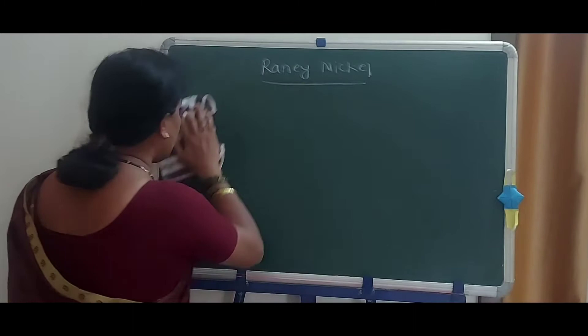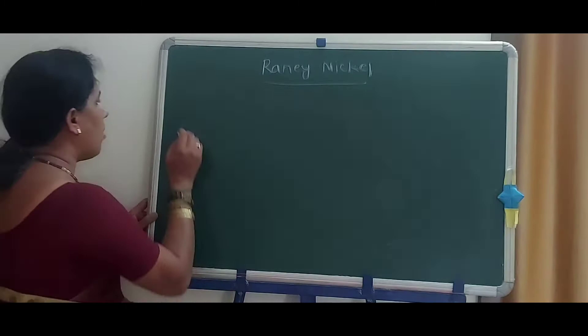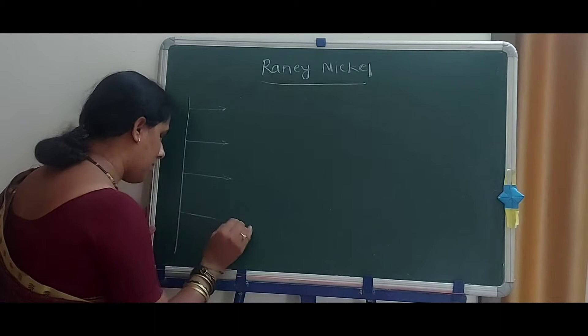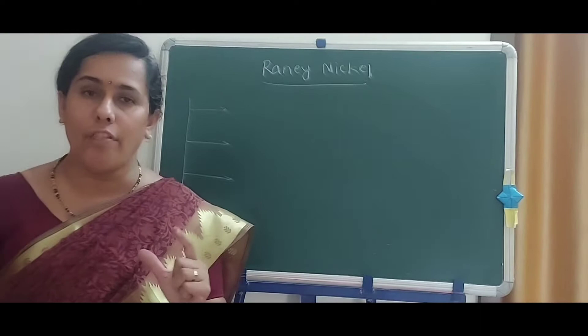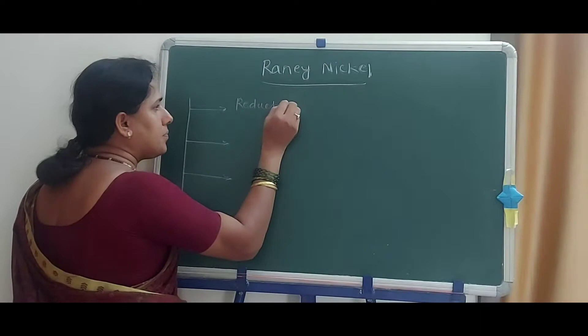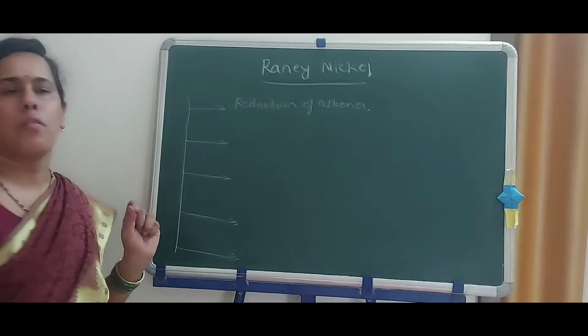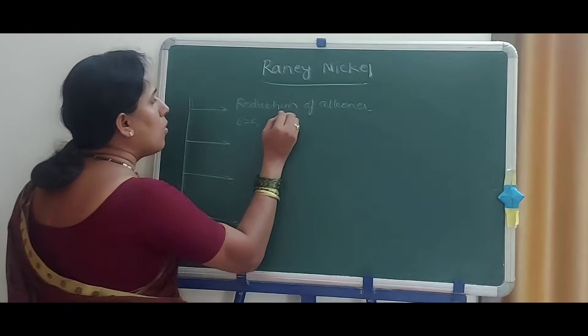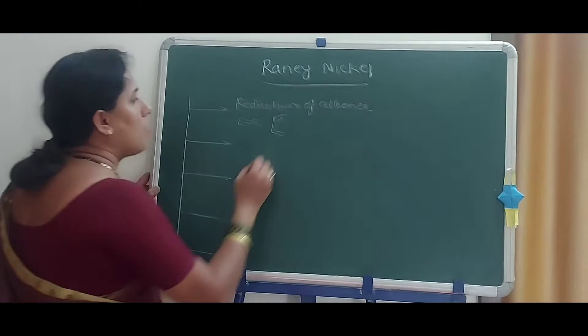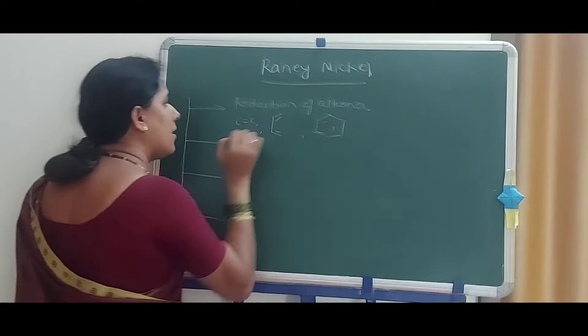A number of applications are available for Raney Nickel. These include: reduction of alkenes, reduction of naphthalene at different temperature ranges, reduction of phenol, reduction of aromatic ethers, reduction of cyano compounds, reduction of nitro compounds, reduction of thioethers, and reduction of halocompounds.